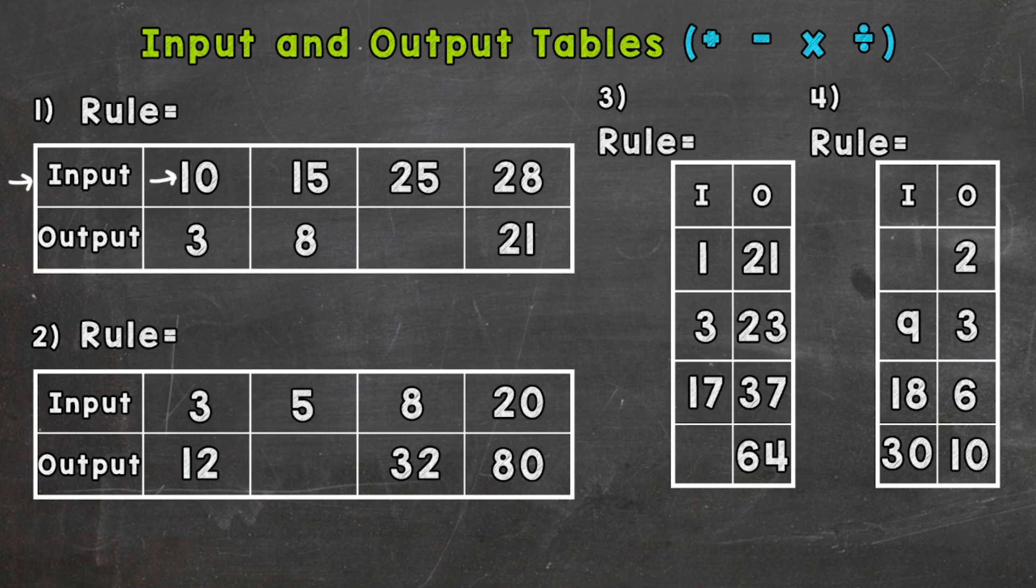10 minus 7 is 3, as we said. Now 15 minus 7 is 8, and 28 minus 7 is 21. So our rule is input minus 7 equals our output. For the blank portion of the table, 25 is our input minus 7 gives us our output of 18.